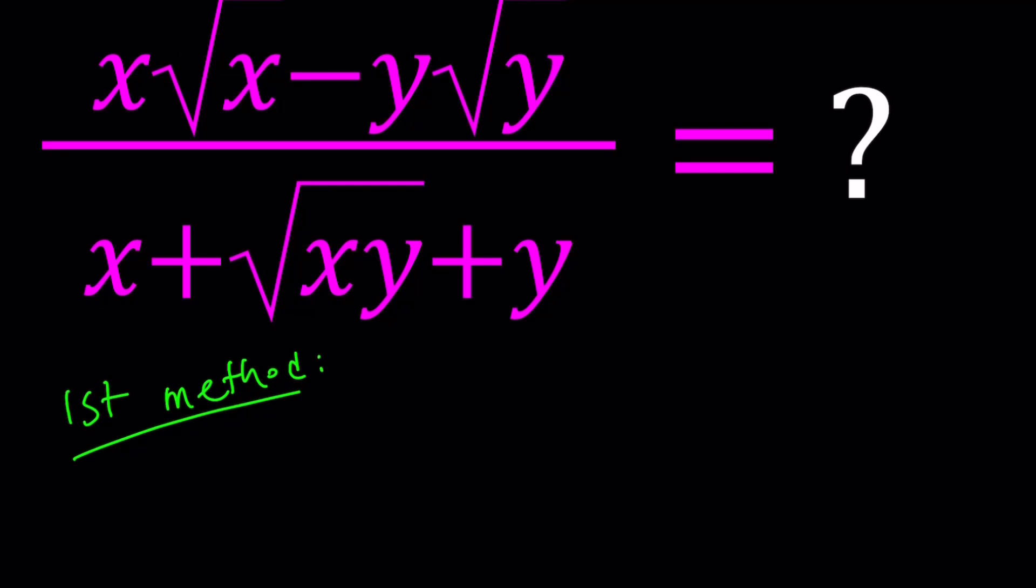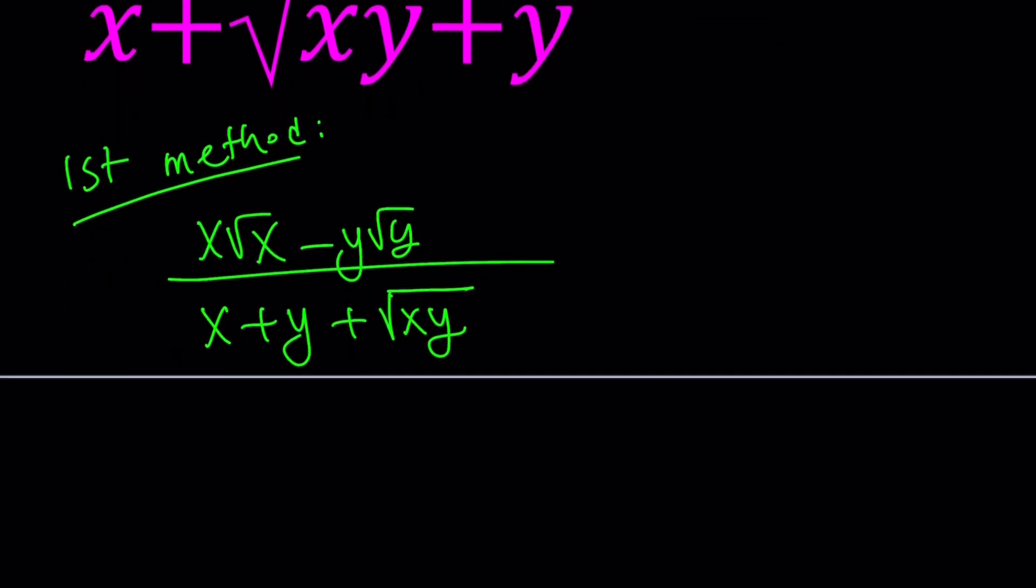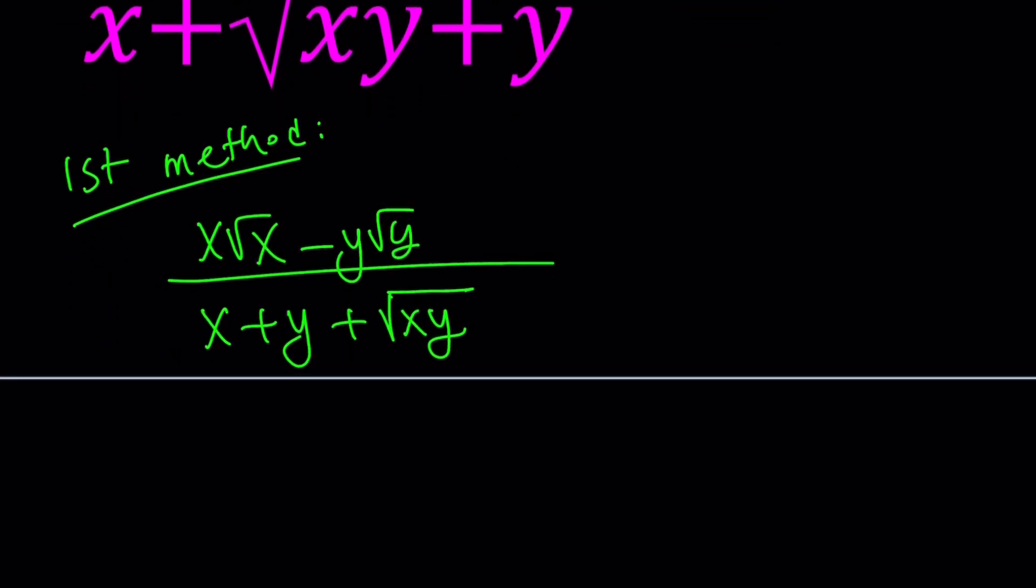For my first method, I'm going to do something that is commonly done with radicals, but for this expression it's a little bit cumbersome, so bear with me. We're going to multiply the top and the bottom by the conjugate of the denominator. Whenever you have something like square root of a plus square root of b, its conjugate will be square root of a minus square root of b. Just change the sign.